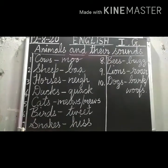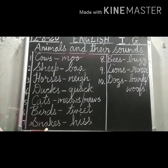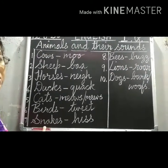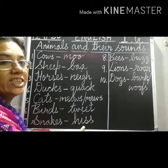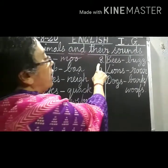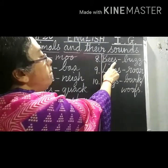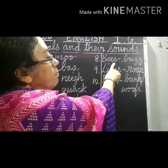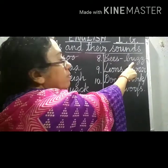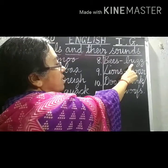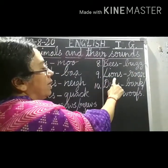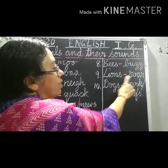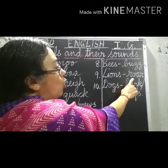Number seven: Snakes. Snakes — hiss. Number eight: Bees. What is the sound of bees? Bees — buzz. Number nine: Lions. Lions — roar.